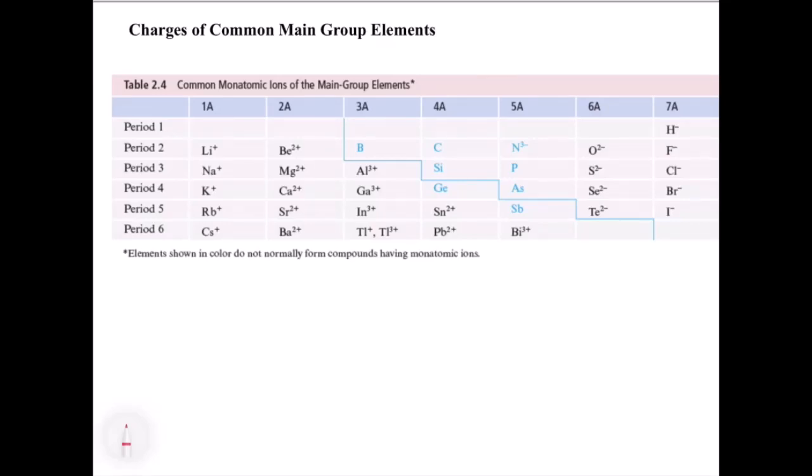So if you look, group 1A, which is the first group all the way on the left of the periodic table, this is the group that has lithium, sodium, potassium, all those guys. This is going to have a plus 1 charge. So at the top left of your periodic table, you can just write above that group plus 1.